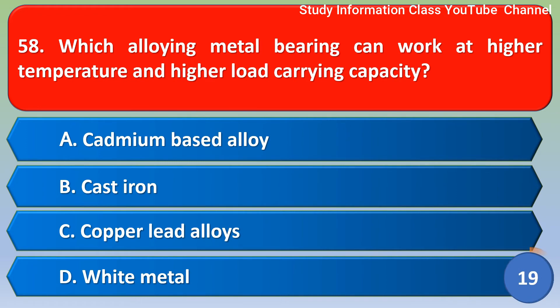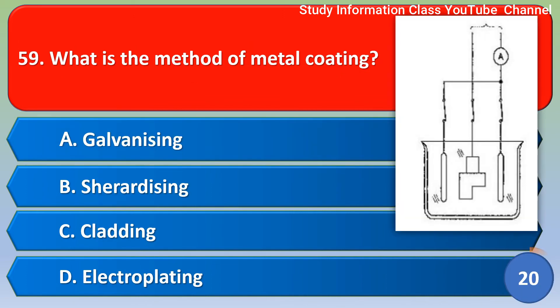Next question: Which alloying metal bearing can work at higher temperature and higher load-carrying capacity? Option A: cadmium-based alloy. Option B: cast iron. Option C: copper lead alloys. Option D: white metal. The correct answer is Option A: cadmium-based alloy.